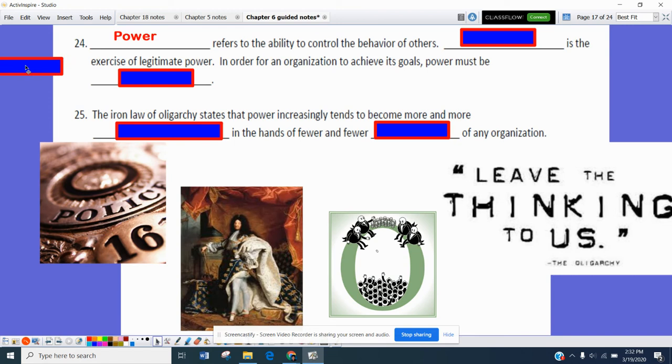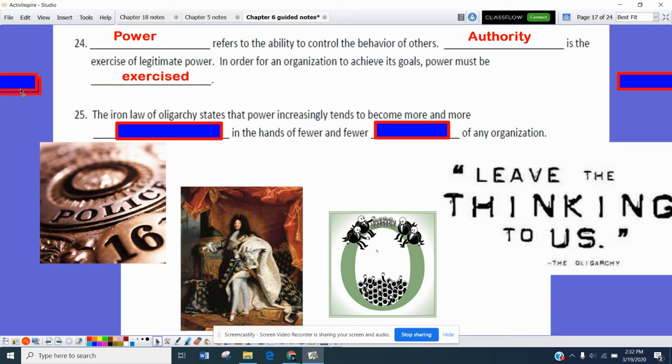Number 24, power refers to the ability to control the behavior of others. And authority is usually the exercise of legitimate power. There are those people out there that crave both. For an organization to achieve its goals, power must be exercised. In other words, there has to be someone who's going to take charge. And they have to have a certain amount of authority to administer that power. Otherwise, people are going to ignore them.